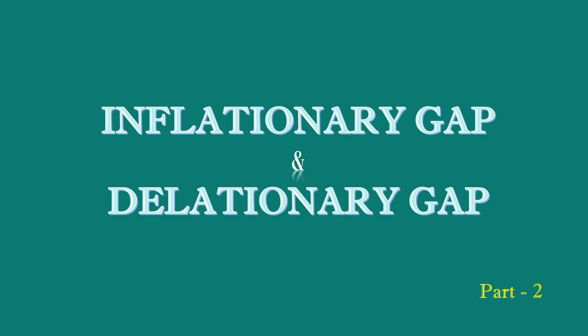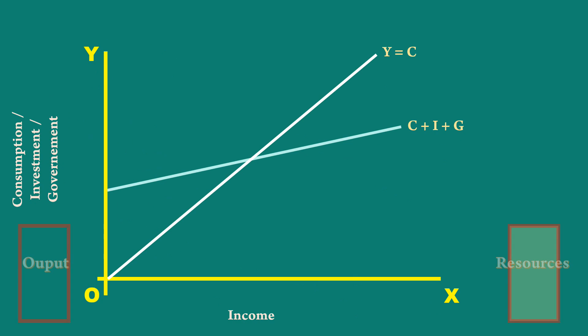Inflationary Gap and Deflationary Gap Part 2. At the very outset, I would like to say well in advance, we have been treating the aggregate demand curve of the three sector economy so far. From now on, let us use the aggregate demand curve of the four-sector economy. Here the components of aggregate demand are C plus I plus G plus X minus M. I am doing this mainly to make our analysis more comprehensive.